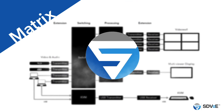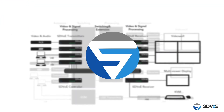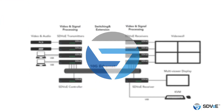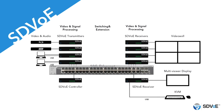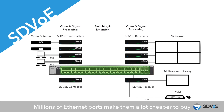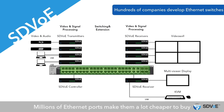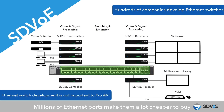So how does SDVoE make all of this less complicated? Let's begin by swapping out the matrix switch for an ethernet switch. Like matrix switches, ethernet switches also need research and development, but unlike the thousands of matrix switch ports available, there are tens of millions of ethernet ports available to us, and that makes them an awful lot cheaper to buy. There are also a huge amount of companies developing ethernet switches, so in ProAV we don't need to worry about them too much, allowing us to focus on the sender and receiver units which use SDVoE technology.